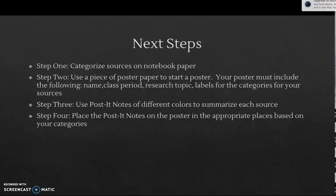So how do I go about putting this together for my own line of inquiry? I'm going to categorize my sources on notebook paper and sketch it out. Then I'm going to need a large piece of poster paper to start a poster. My poster needs to include on the front: the name, the class period, the research topic, and labels for the categories for my sources. Visually, however you want to go about doing that is fine — you might want to do it in columns, a bubble map, or a web map.